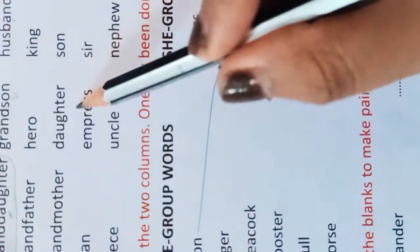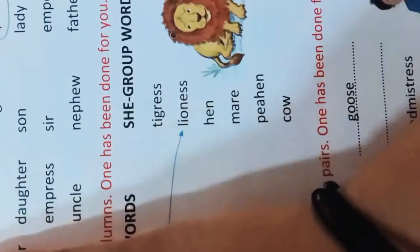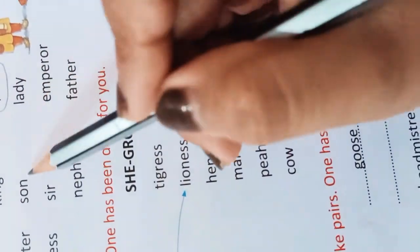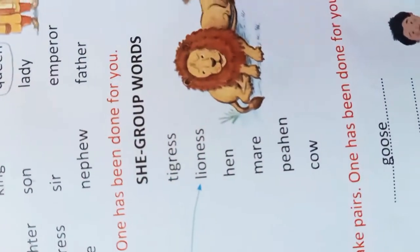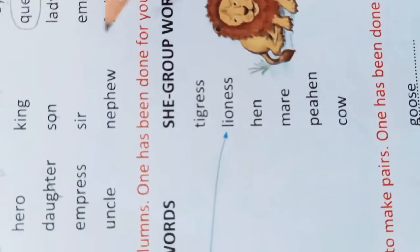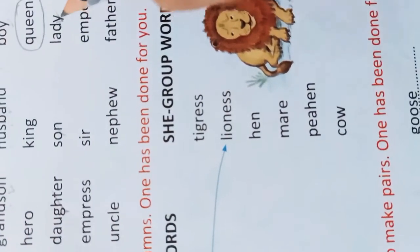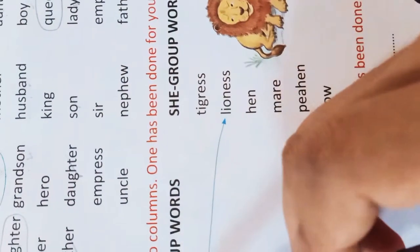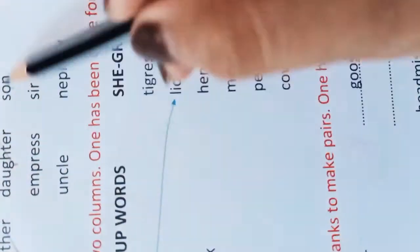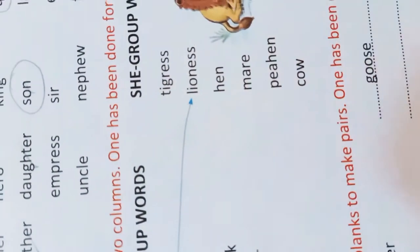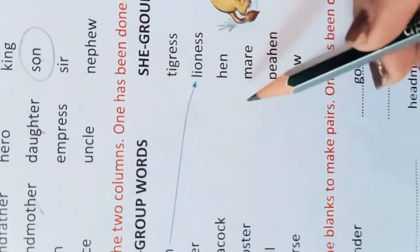In number four: grandmother, daughter, son, lady — grandmother (दादी), daughter (बेटी), and lady (औरत) all come in the She group — C group words. Son (बेटा) is the odd one, because son belongs to the He group.